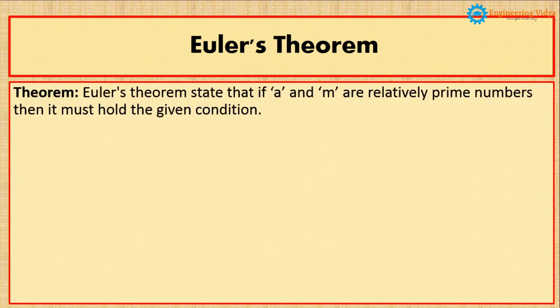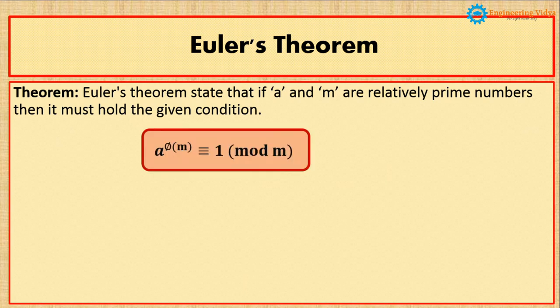This is the statement of Euler's theorem. It says that Euler's theorem states that if a and m are relatively prime numbers, then it must hold the given condition. The condition is given as a raised to phi of m is congruent to 1 mod m.